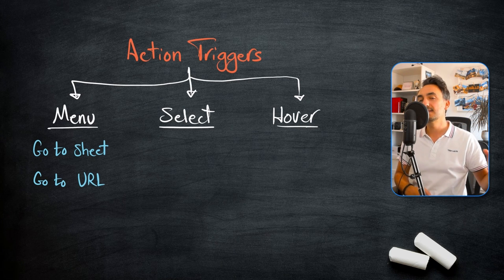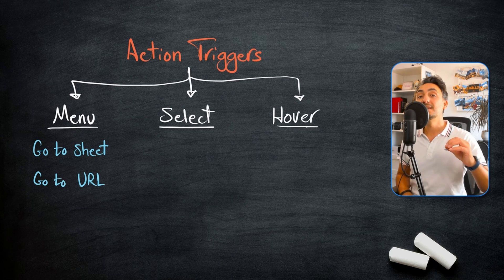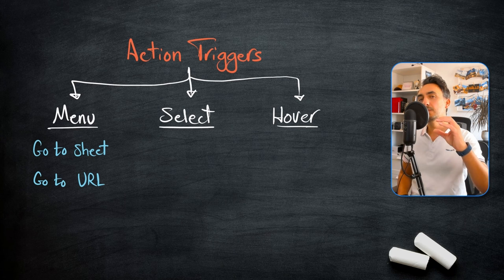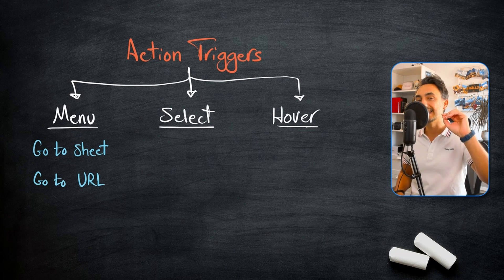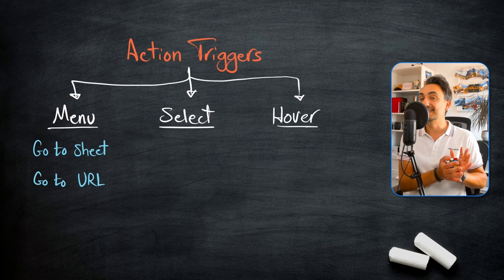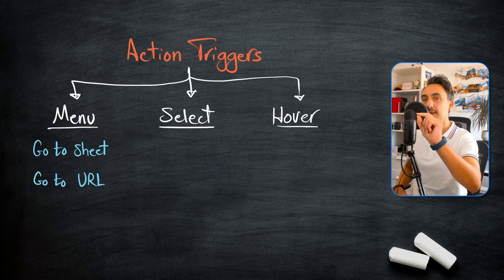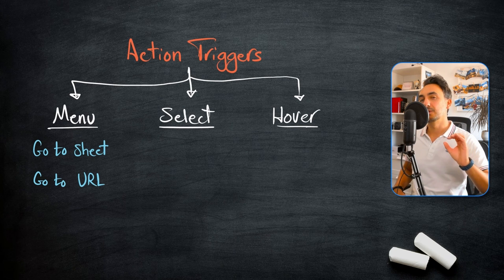It's better to give the options to the users to select this option using menu. So first show the menu, let the user see the link, and then if the users want to go there they can select the link and click on it. It's always better than to surprise them by select. If the users select on something and suddenly they go somewhere else, it's really not nice. So go with menu if you go to URL or go to sheet.